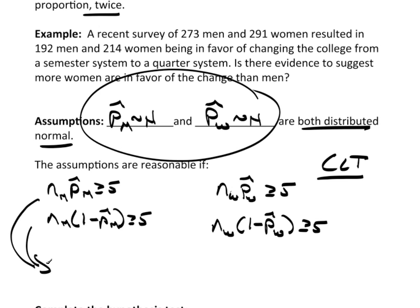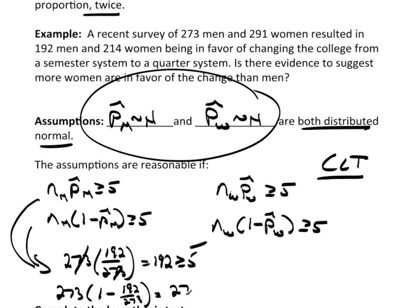So, for the men, the number of men, which was 273 times p-hat, that's going to be 273 times 192 over 273. Obviously, that cancels. That's 192, clearly greater than or equal to 5. And then the 273 times 1 minus 192 over 273. That's going to be the same as 273 minus 192, which is 81.